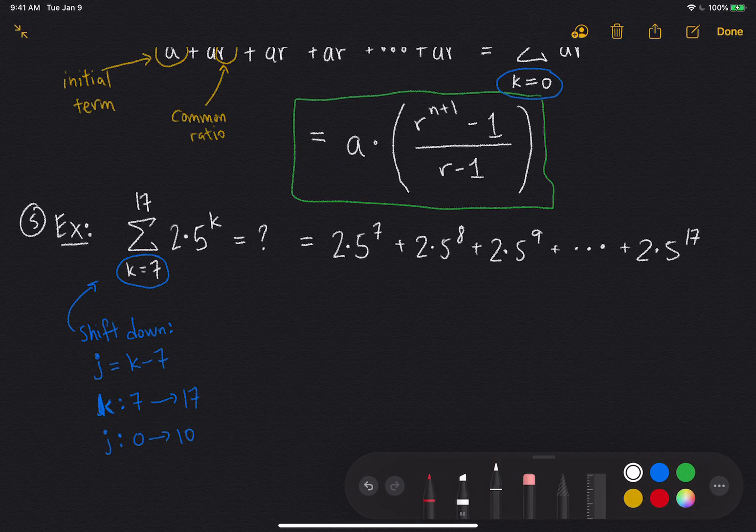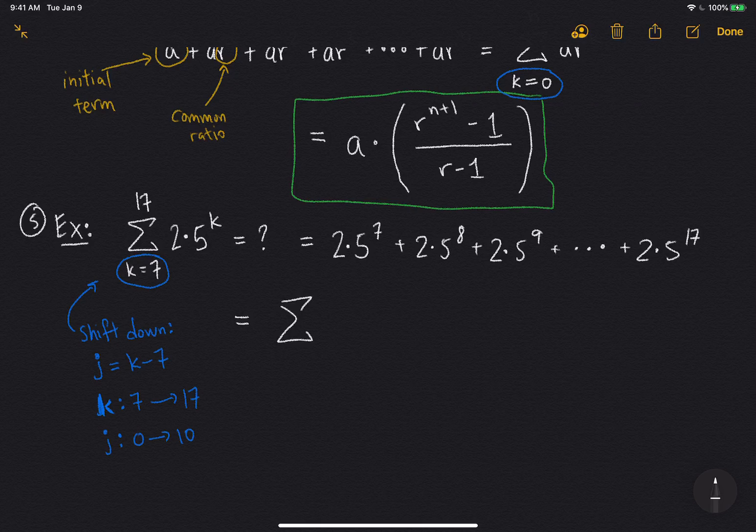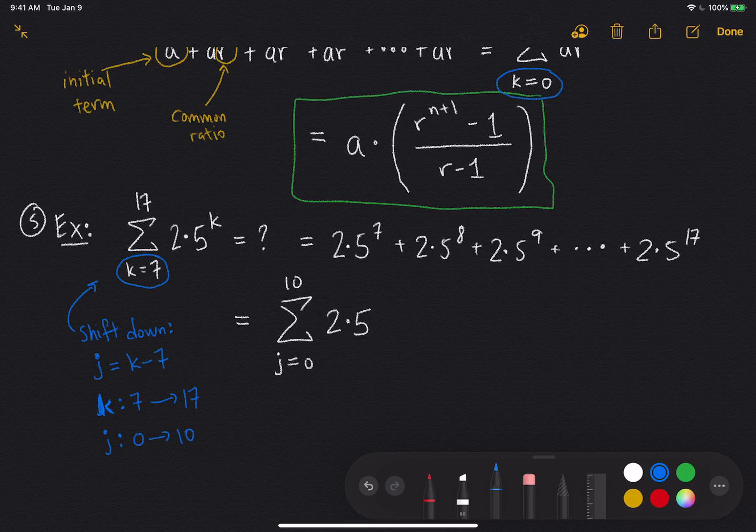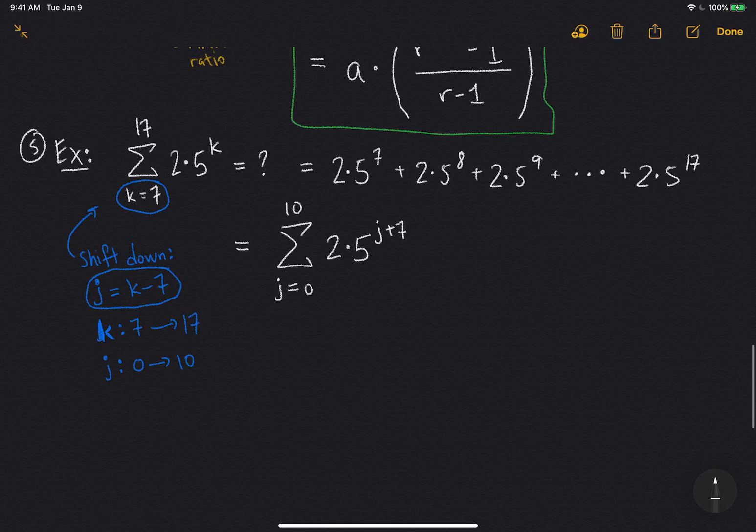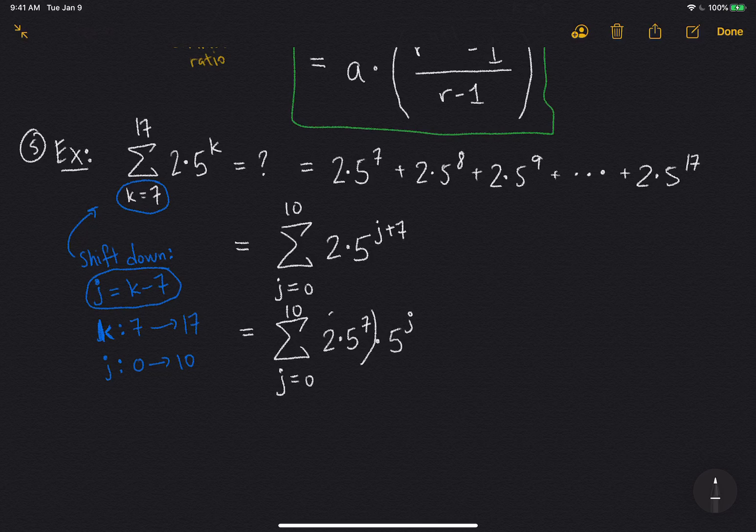So I can write this whole new sigma in terms of j now. So j, like I said, ranges from 0 to 10. And the term stays the same, 2 times 5 to the k, but you see k is, since j is k minus 7, k is j plus 7. So I can write j plus 7 here. Okay, now let's simplify this a little bit. I can write this as the sum of j equals 0 to 10 times 2 times 5 to the power of 7 times 5 to the power of j.